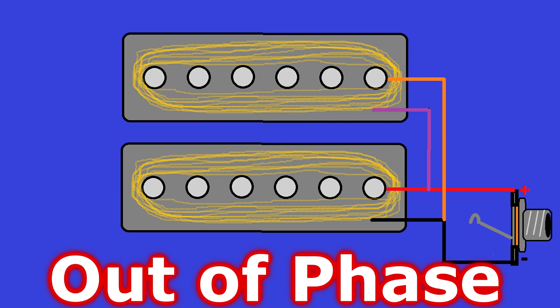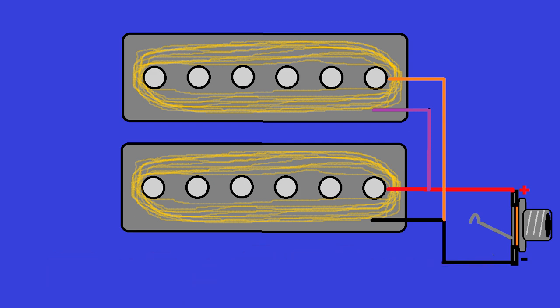The only drawback is that with this one pickup that is hooked up backwards, your outer windings are hooked to the positive lead. And this takes away the shielding effect that those outside winds being negative would normally give you.